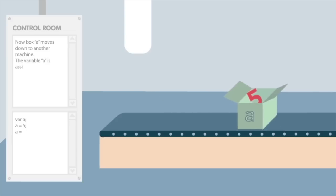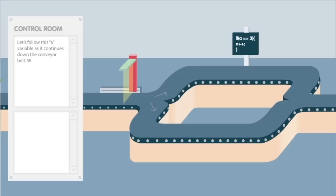Now box A moves down to another machine. The variable A is assigned the value 3. Let's follow this A variable as it continues down the conveyor belt.